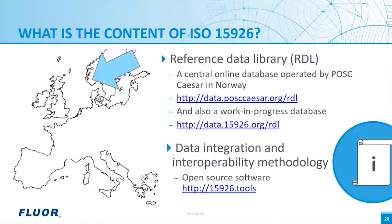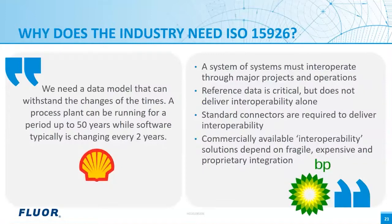The three addresses — the POSC Caesar library, the work-in-progress database, and the tools — are open to the public. When the ISO 15926 work started, Shell said they need a data model that can withstand the changes of the times: a process plant can run for up to 50 years while software typically changes every two years. For that purpose, ISO 15926 has a generic data model — the standard does not model pumps and pipelines, but the terms and relationships to model these by. BP said the system of systems was interrupted through major projects and operations; reference data is critical but does not deliver interoperability alone — standard connectors are required.